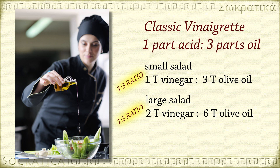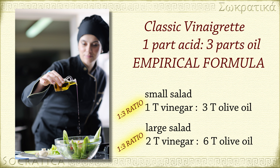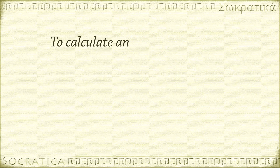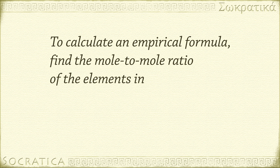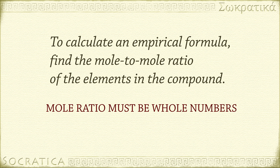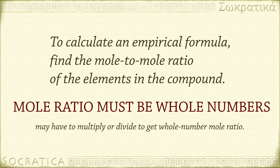The smallest whole number ratio — the empirical formula — is that essential recipe. When you calculate an empirical formula, you find the mole-to-mole ratio of the elements in the compound. This ratio must be whole numbers. If any of the numbers in the ratio are not whole numbers, you multiply or divide them all by a number to get whole number ratios.